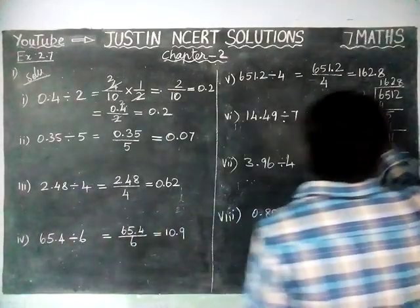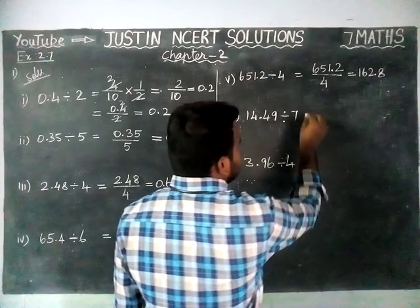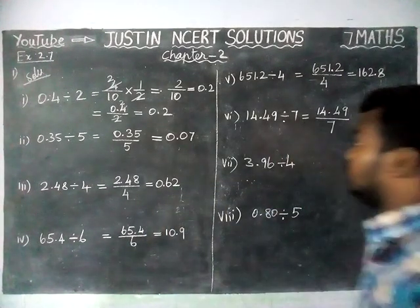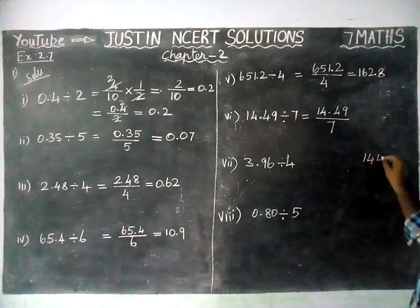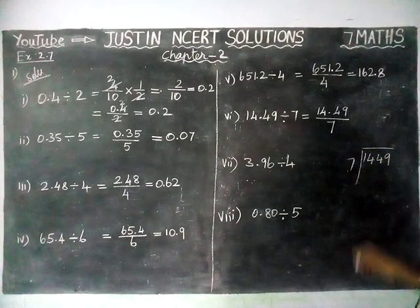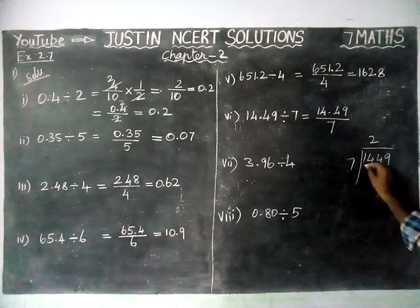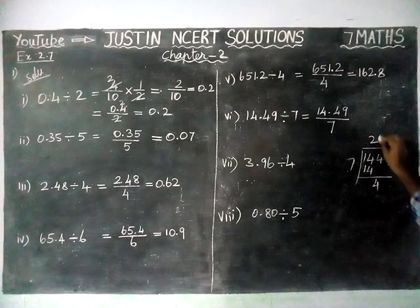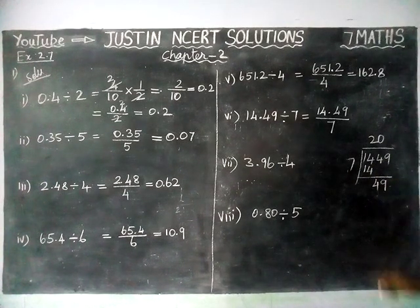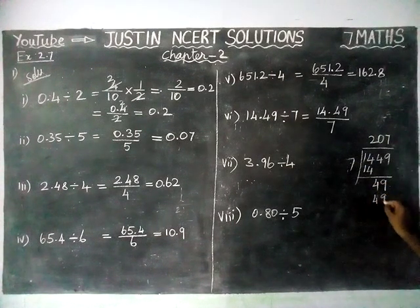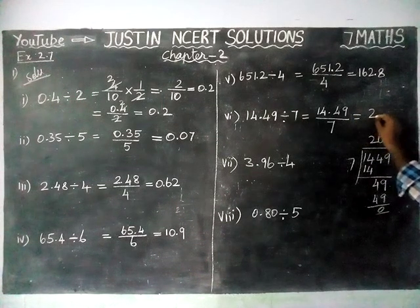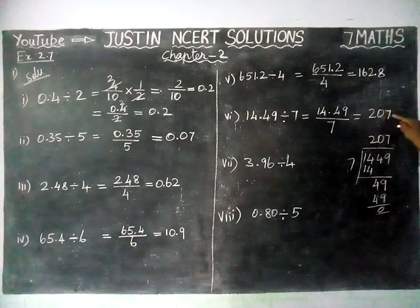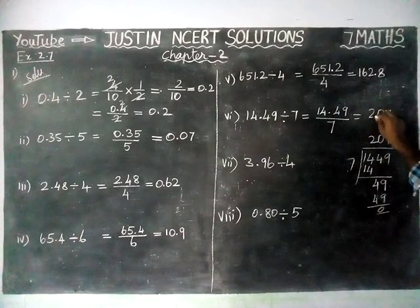Sixth question: 14.49 divided by 7. Treat as 1449 divided by 7. In 14, 2 sevens are 14, remainder 0. Take 4 — cannot divide by 7, so write 0. Take next digit 9: 7 sevens are 49, remainder 0. Answer is 207; with 2 decimal points from the right, the answer is 2.07.